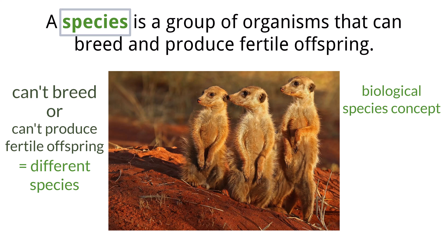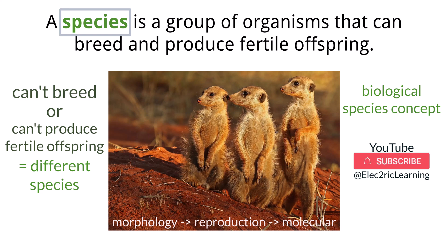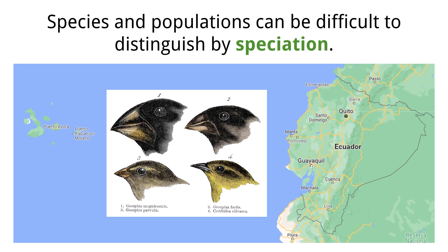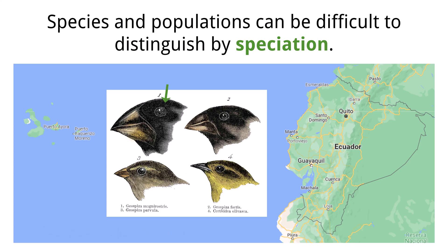This conversation about how to define what a species is continues as we find new ways to compare organisms. It started with morphology, then moved to reproduction, and now we can look at DNA along with other molecular data and fossil records. For the IB exam, you need to know the biological species concept definition along with a few ideas that can challenge it. Drawing the line between two organisms that are or are not the same species can be difficult because the process of deriving new species is a slow and gradual process. This process of starting with one population described as one species and having it diverge into two populations of two different species is called speciation.